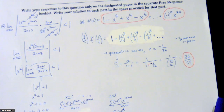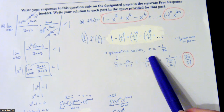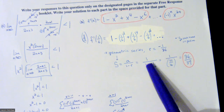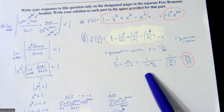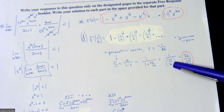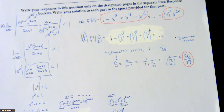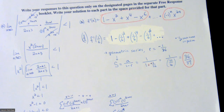Use S = a/(1 − r): the a value is 1, and 1 minus (−1/36) equals 36/36 plus 1/36, which is 37/36. So the sum is 1 divided by 37/36, which is the reciprocal: 36/37. It's a bit of an intense problem with a lot of parts, but it's all stuff we've practiced and seen before. Keep studying, work through these problems from scratch on your own, and let me know if you have any questions.